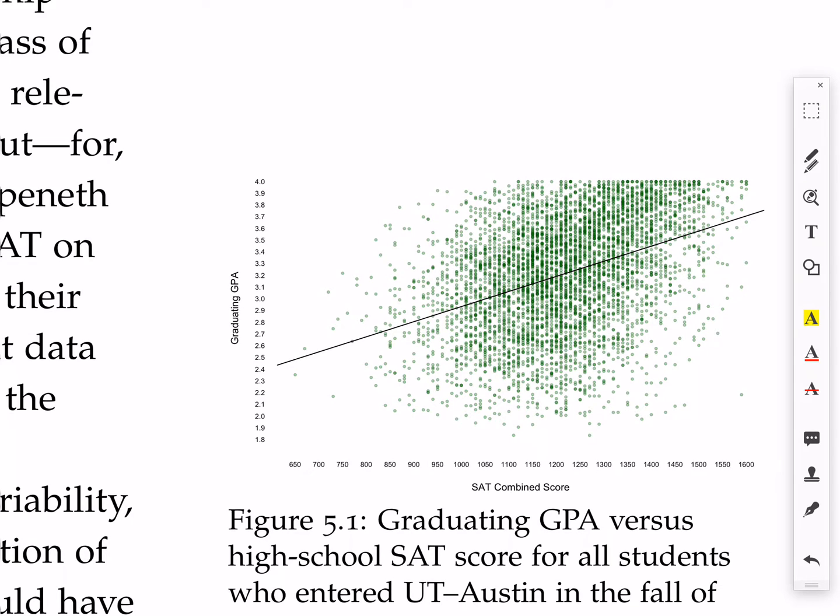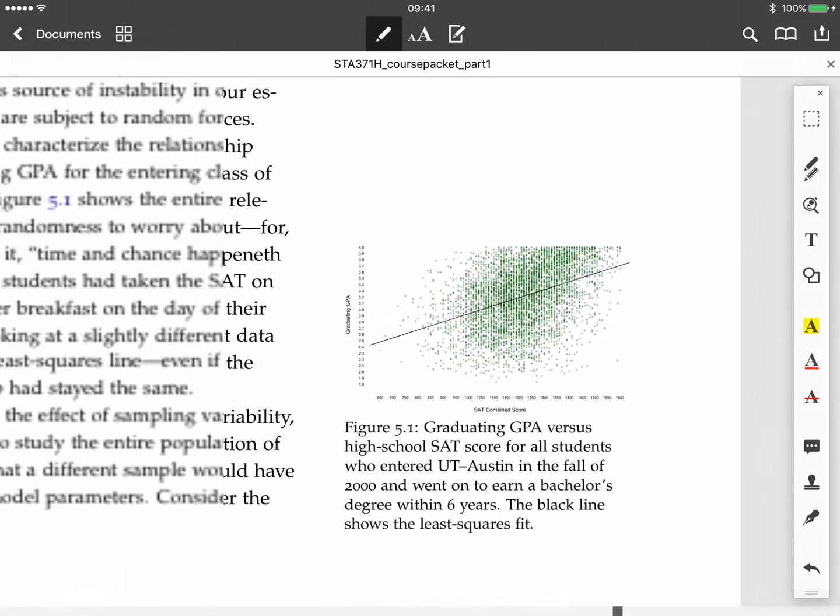The obvious question is, how different could it have been? That's giving us some notion of how much we can trust this particular line that we got for this particular data set.